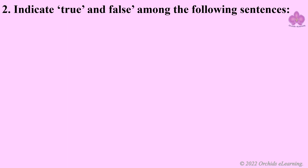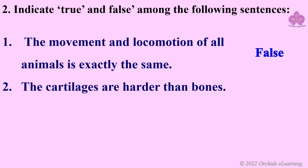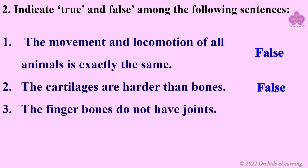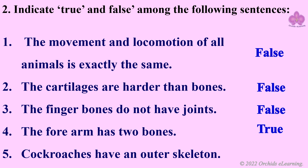State true or false: The movement and locomotion of all animals is exactly the same — false. The cartilages are harder than bones — false. The finger bones do not have joints — false. The forearm has two bones — true. Cockroaches have an outer skeleton — true.